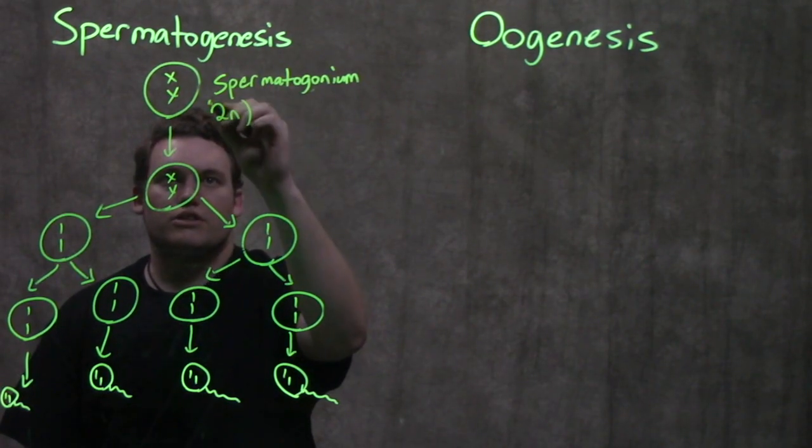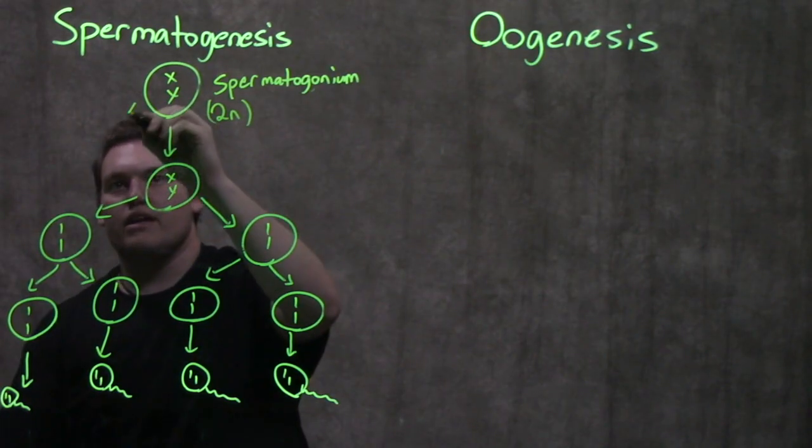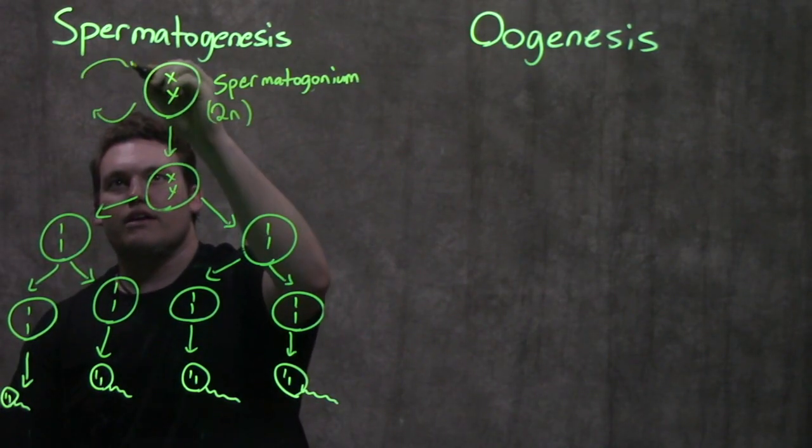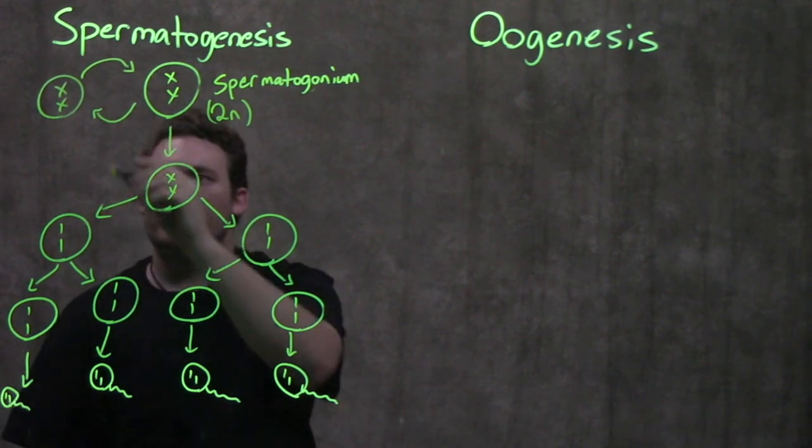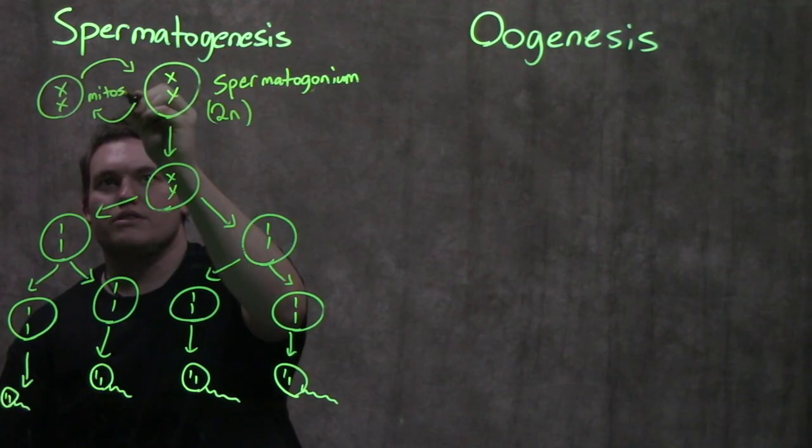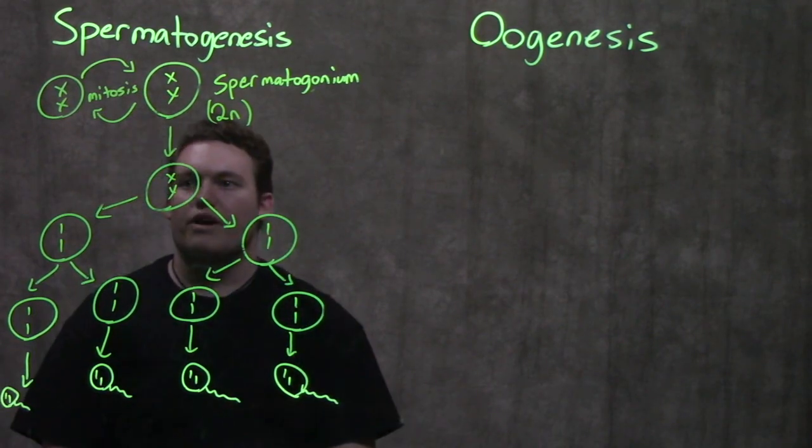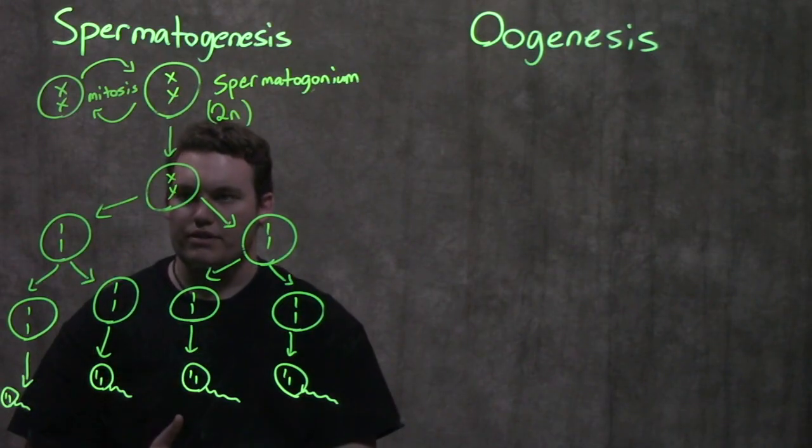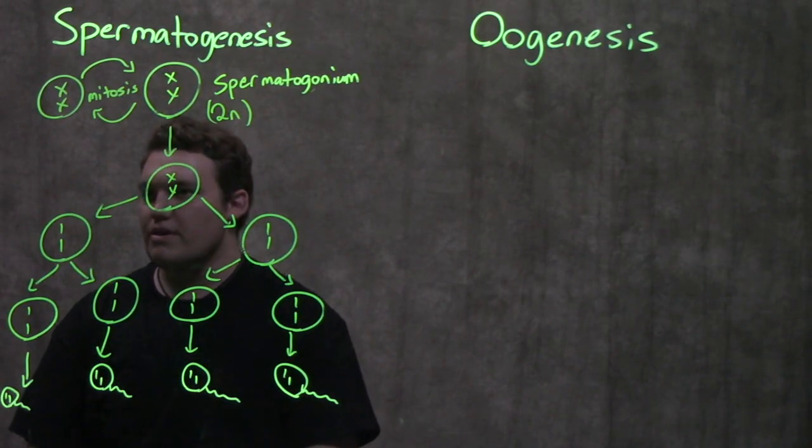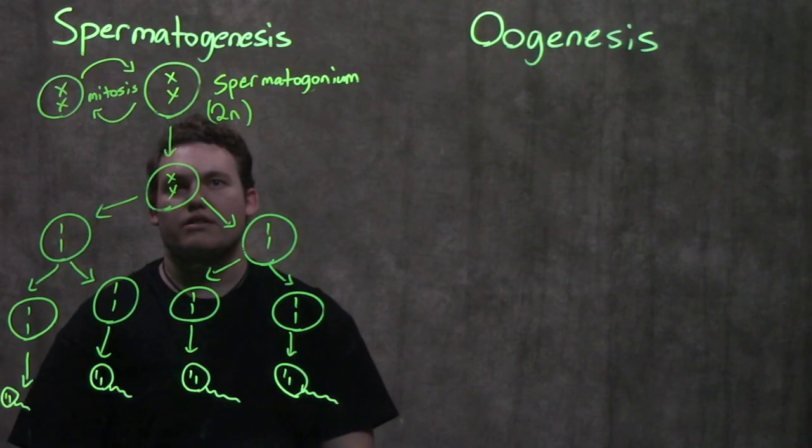so it's just like a skin cell and can mitotically divide. It can go through mitosis, so whenever it's not going to go through meiosis, it can replicate more of itself. That happens more in males than females, and we'll find out why in a minute.